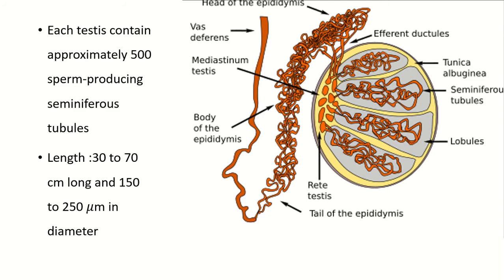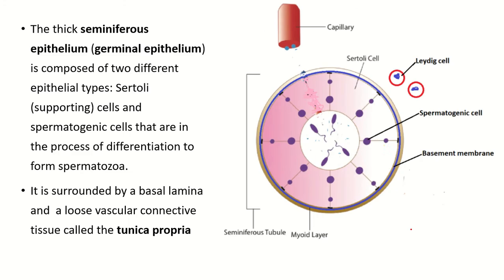This is the sagittal section of the testes. The outer layer is known as the tunica albuginea. These are the septa, which divide the testes into different testicular lobules. Each testicular lobule contains one to four seminiferous tubules. When we look at the testes in histological section, we see several circular areas, and each circular area is a single seminiferous tubule.